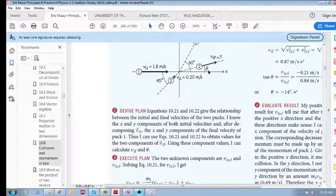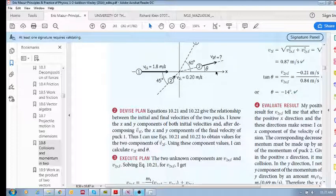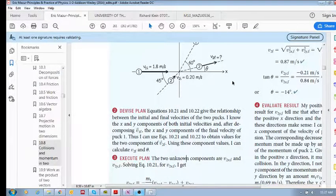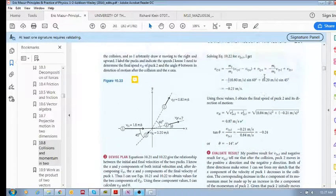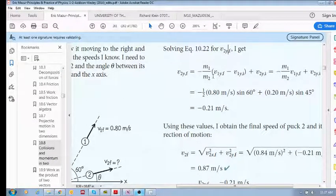But now we still need the vertical component. So we use now this equation, equation 10.22. Again, m1 over m2 is a half. What is v1y final? It is going to be this vertical component, so 0.8 sin 60.